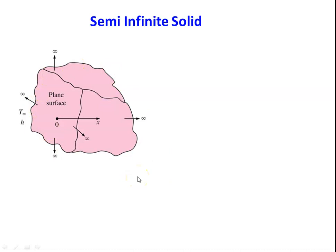This is the diagram of a semi-infinite solid. The length of the solid is infinite in all the directions and it has a definite surface — a plain surface at the front and infinite length in all directions. When this surface is exposed to different conditions, heat will flow inside or outside. A practical application: the earth surface can be considered as a semi-infinite solid, with a plain surface and infinite length in all four directions and towards the center of the earth.